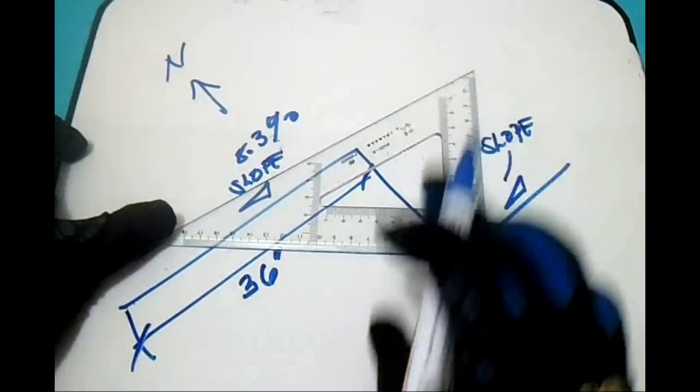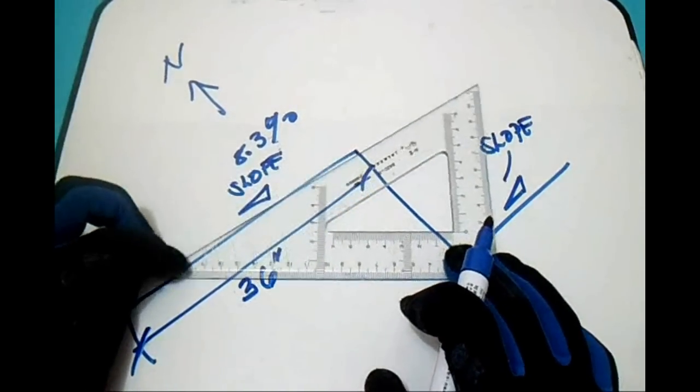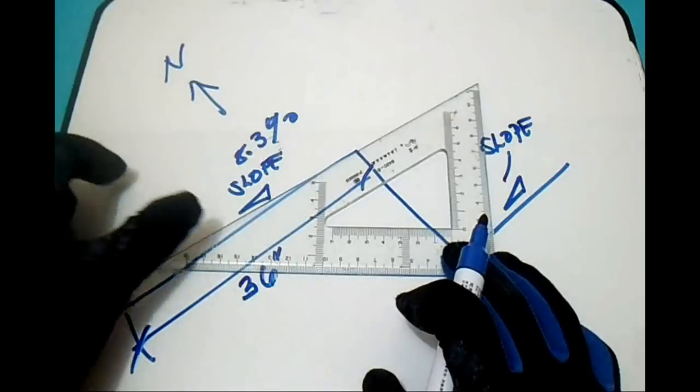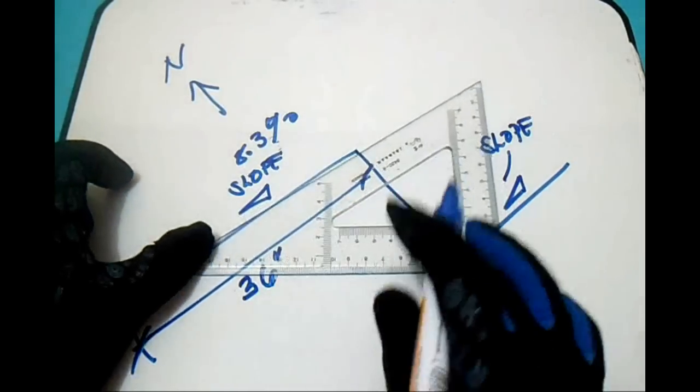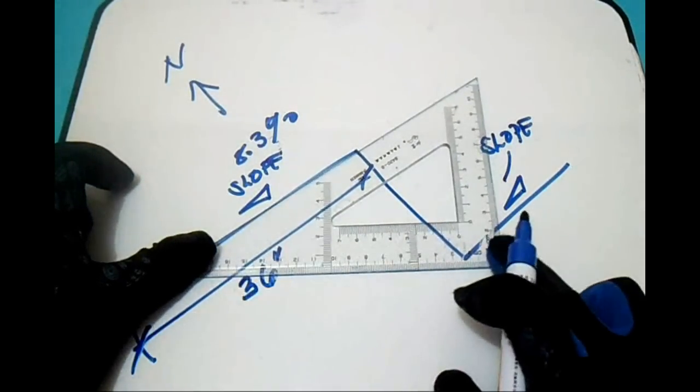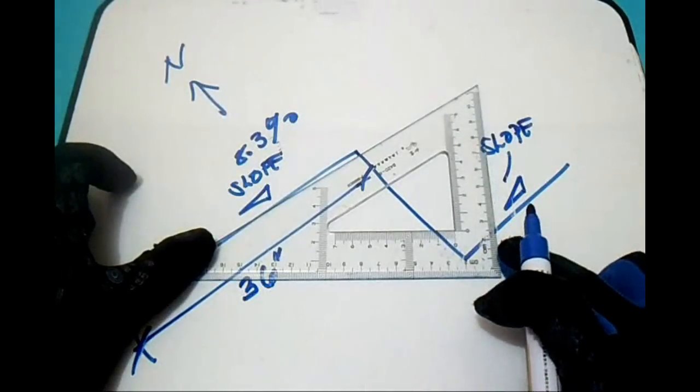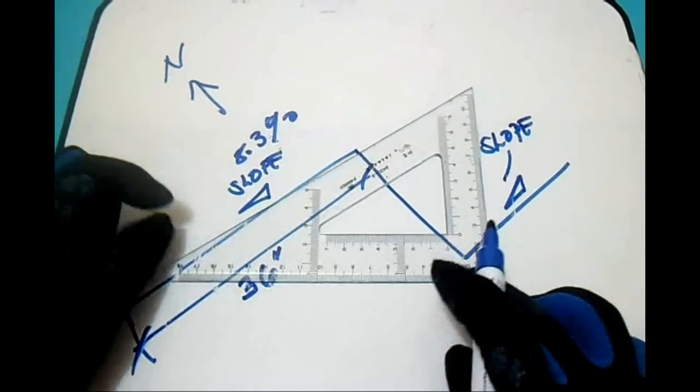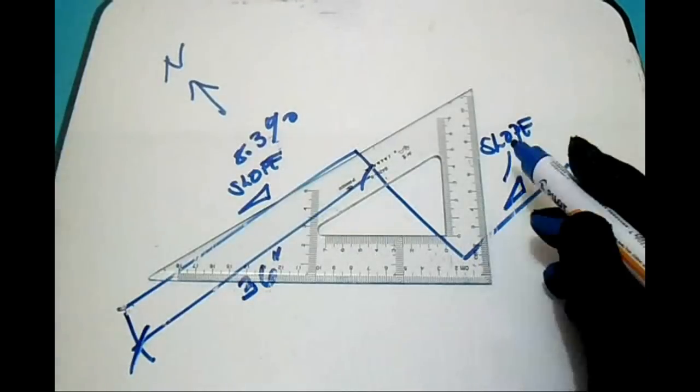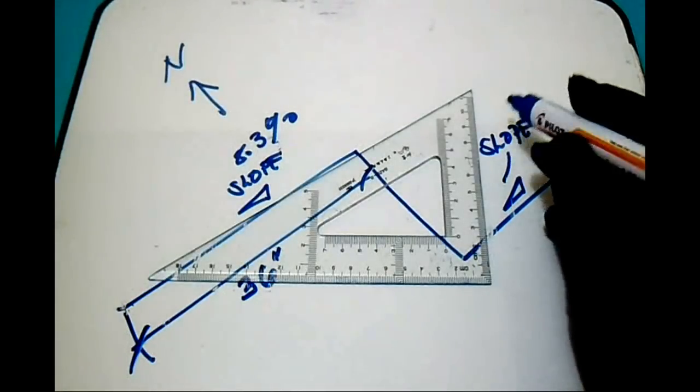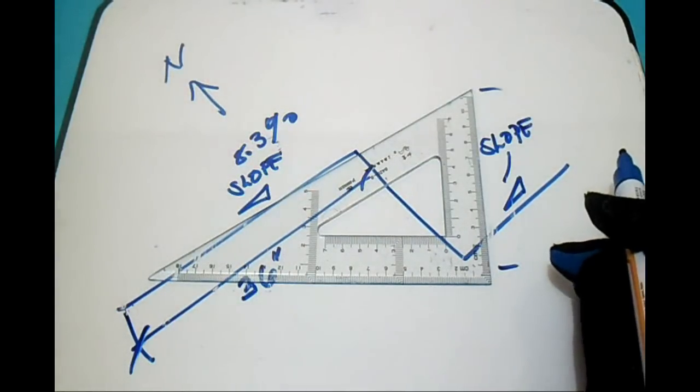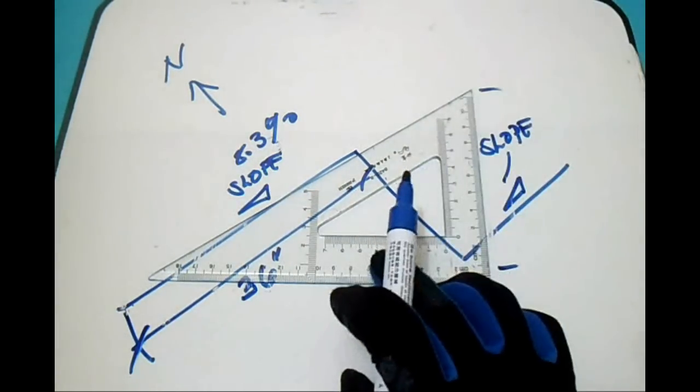We have 36 inches here. This is our run, and this is our set. So our run is 36. Let's compute it.